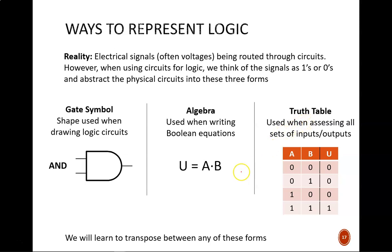Which form is most convenient to use depends on the application. Gate symbols are most useful for drawing and then wiring physical circuits. Boolean algebra is most useful for simplifying complicated expressions. Much more on that in a later video.